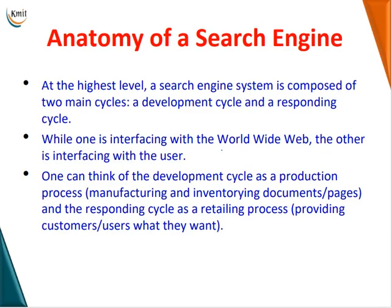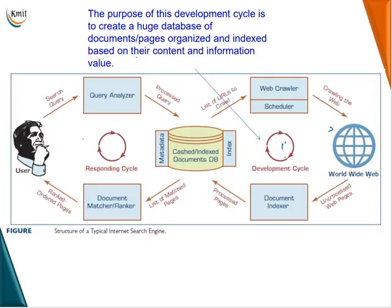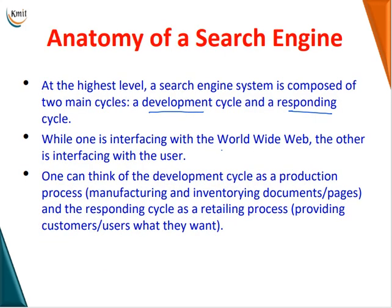Anatomy of a search engine. At the highest level, a search engine is composed of two main cycles. The first one is the development cycle and the second one is the responding cycle. The development cycle is the interface with the World Wide Web, and the responding cycle is the interface with the user. One can think of the development cycle as a production process and the responding cycle as a retailing process.